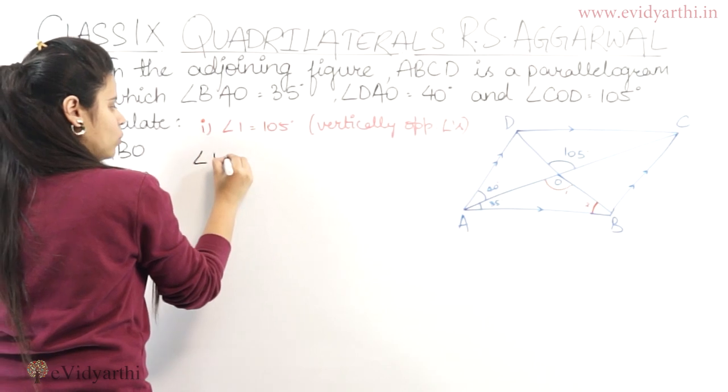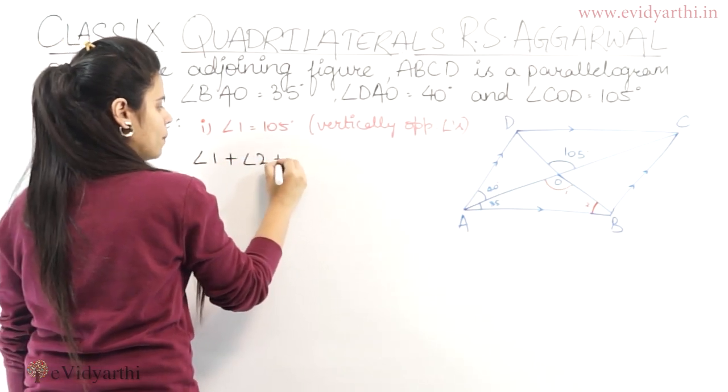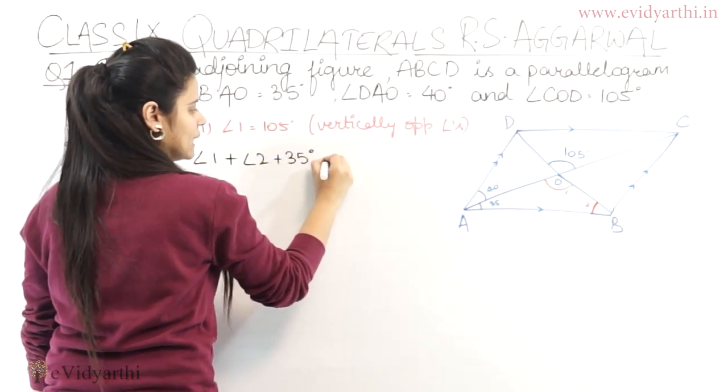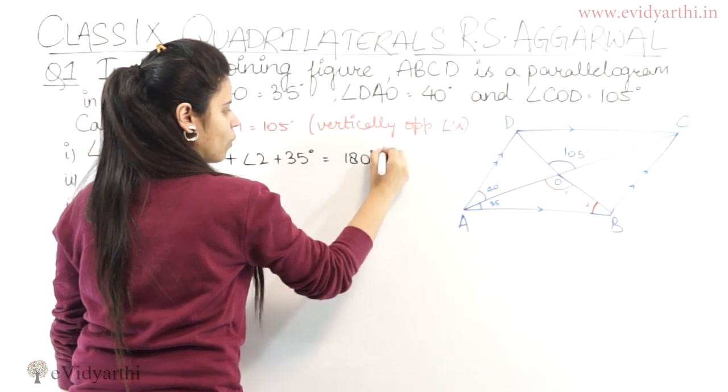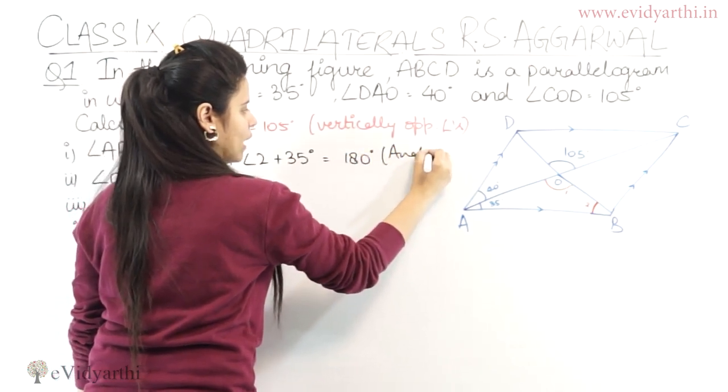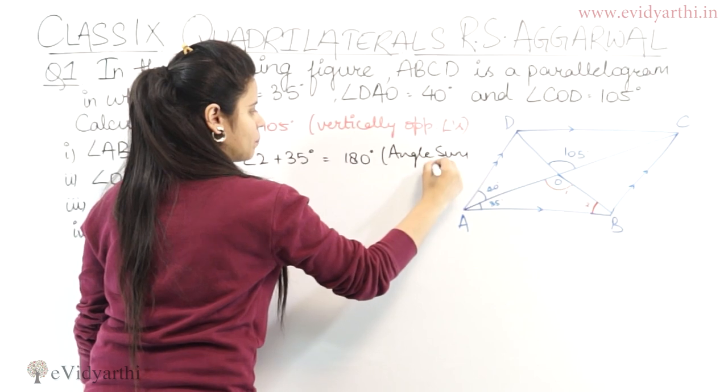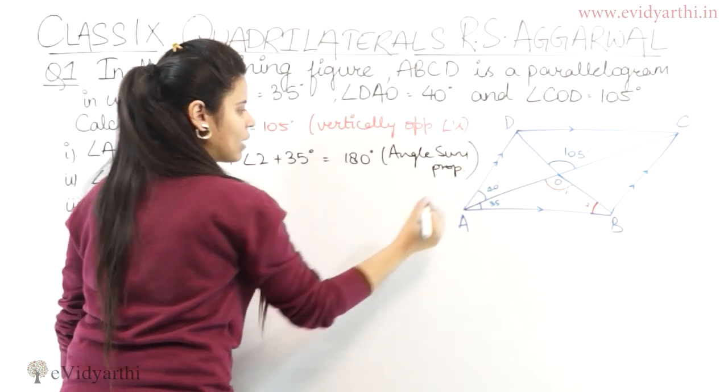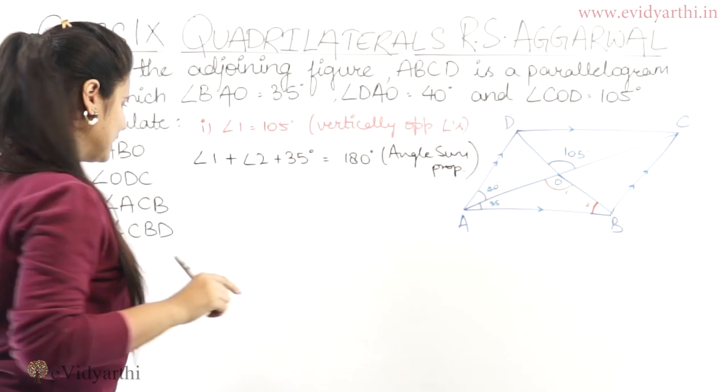So I can write angle 1 plus angle 2 plus 35 degrees equals 180 degrees. What reason should we give? Angle sum property, because you know that if there is a triangle here, its three angles sum to 180 degrees.